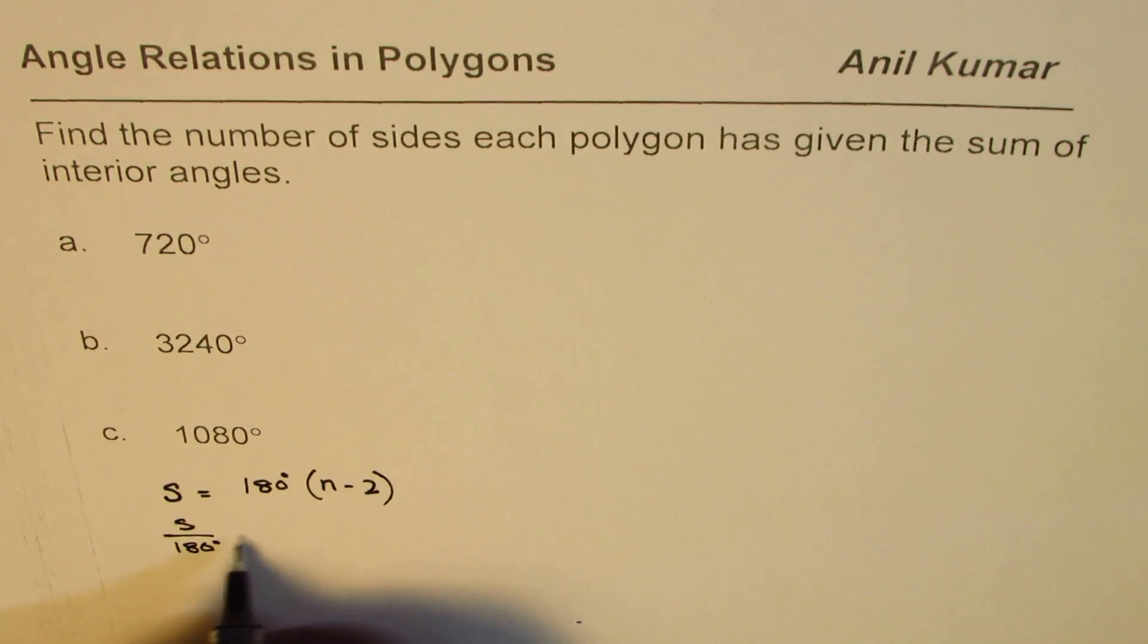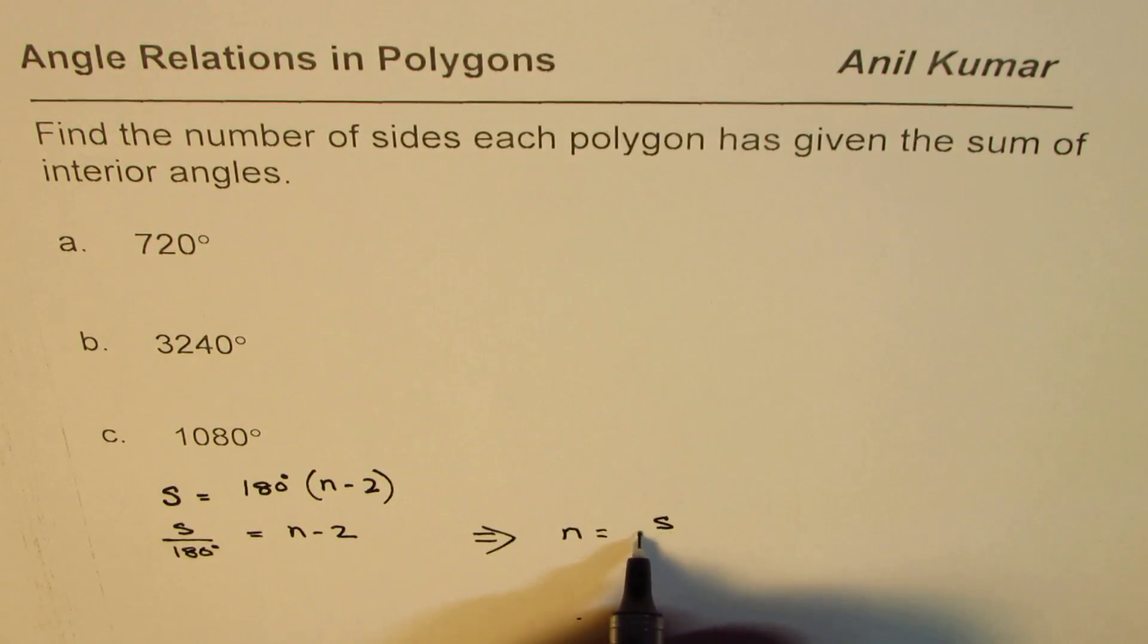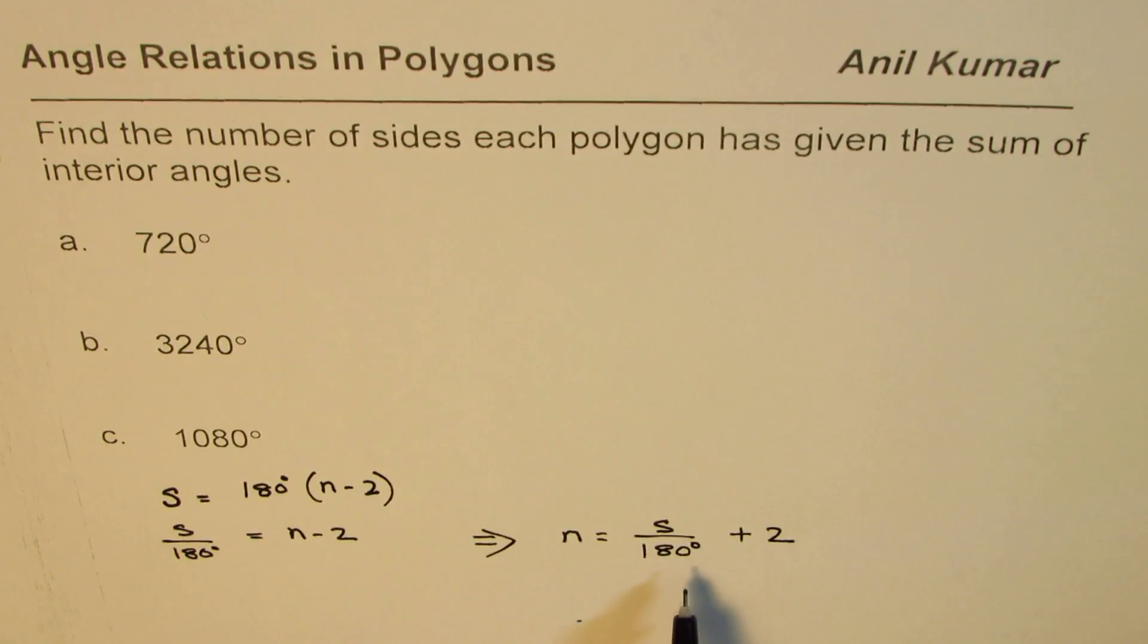180 degrees equals (n - 2). From here we can write what n is: n = S/180° + 2. This is the formula which can be applied to find the number of sides.